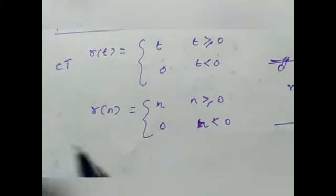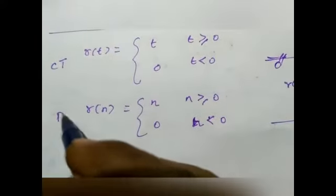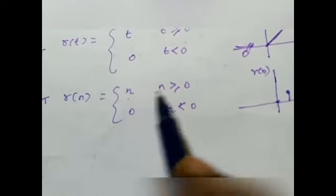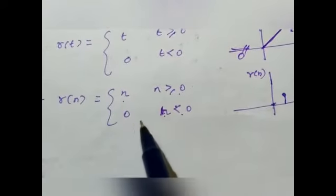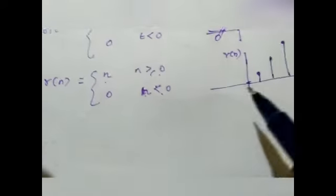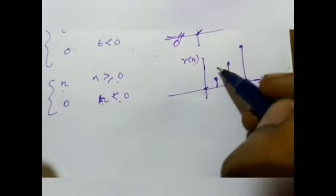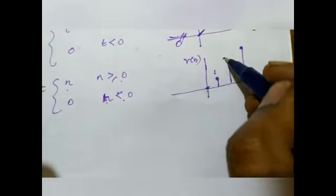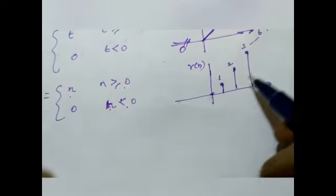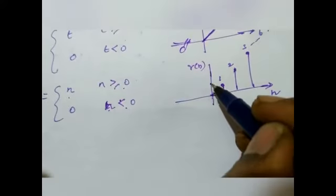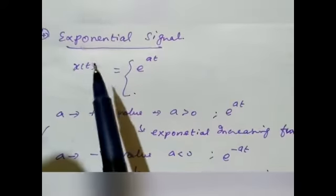The same ramp signal for discrete time is r(n). For positive n the function value is n, and for negative n the function value is 0. The function value gradually increases in a linear manner.